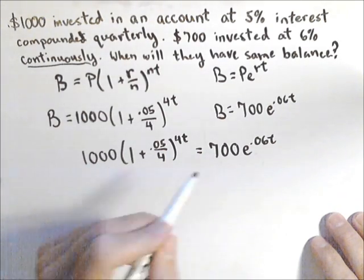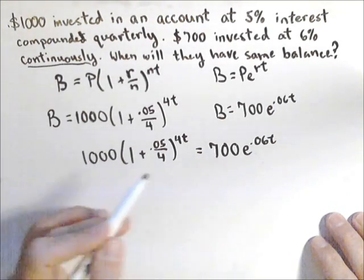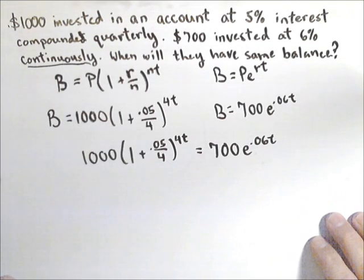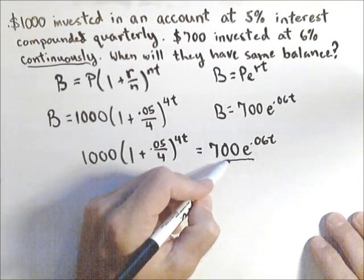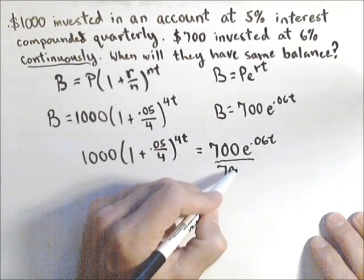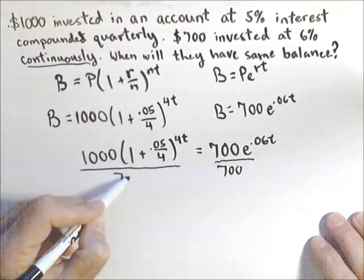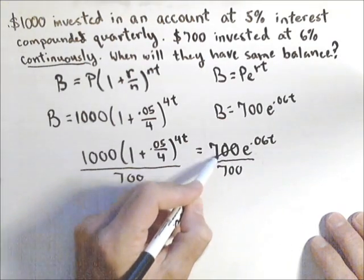The first thing we're going to do is we need to divide by one of these factors out front. Since they're not the same, we're not going to get rid of both. We're going to have one. But we can at least get rid of one of them, so I'm going to divide both sides by 700. At least I isolate one of my exponentials.